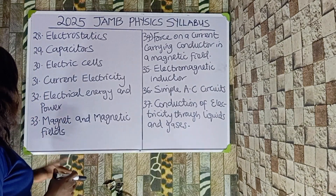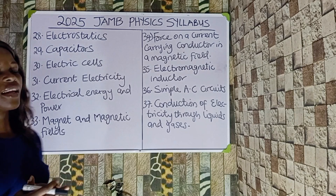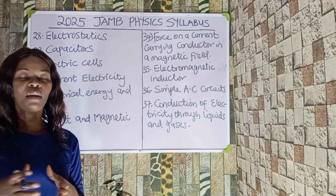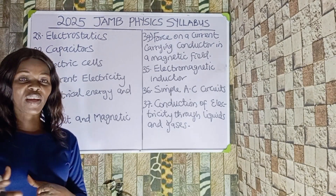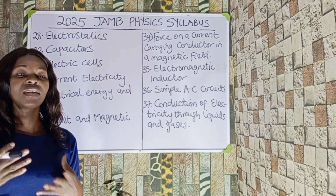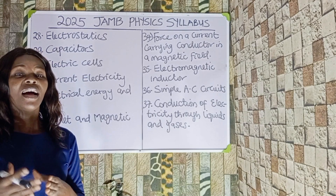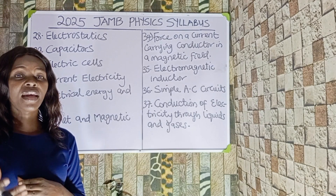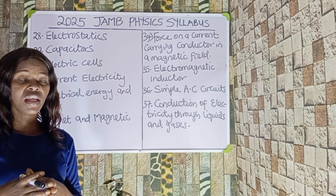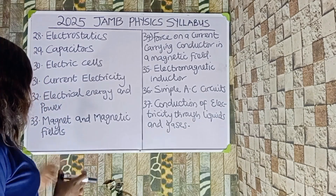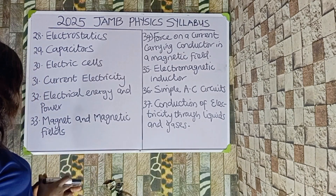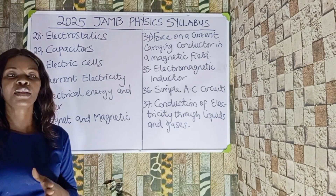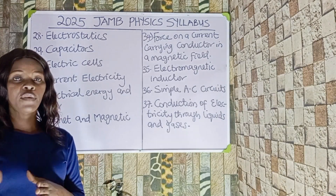Number thirty-one is electrical energy and power. We should know how to calculate our energy consumption — how we consume energy — which is very important. Next we should also look at magnets and magnetic fields.